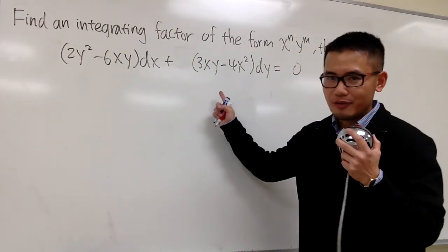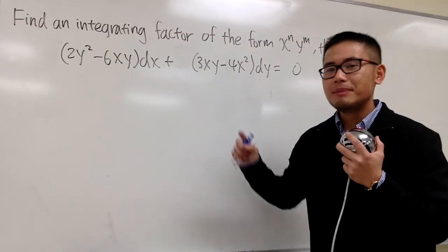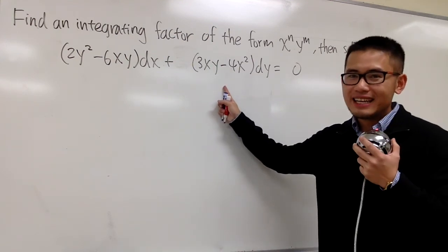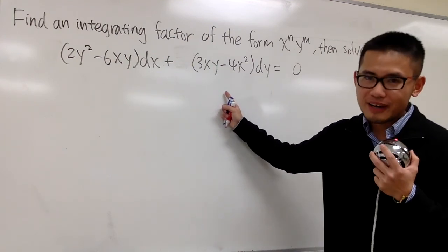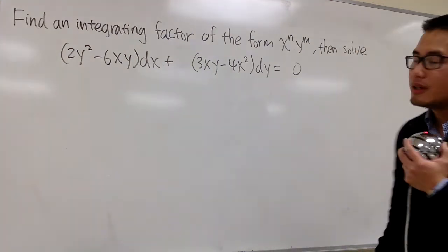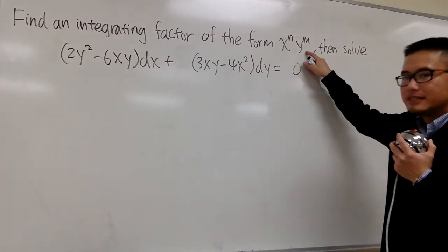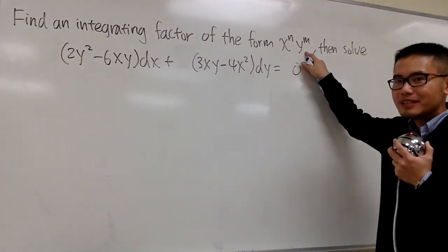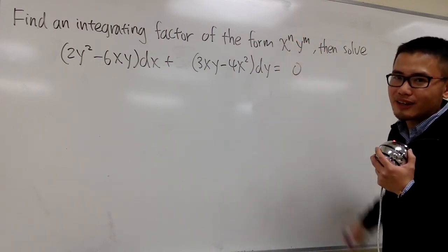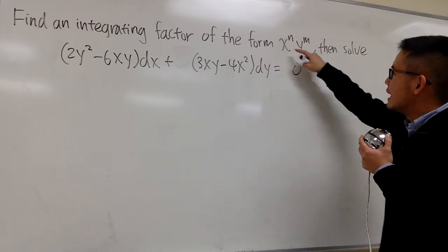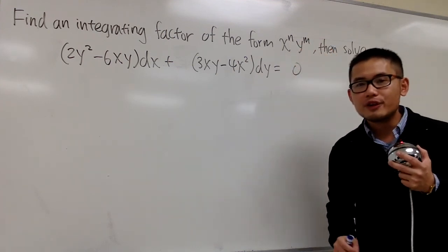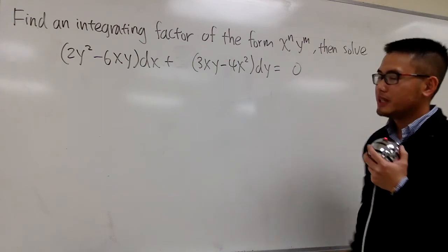Let's go ahead and solve this differential equation. This equation is not exact, but we do have an integrating factor — and this time the integrating factor is special. The question tells us it has the form x to some power times y to some power. Our goal is to figure out what those powers are supposed to be.